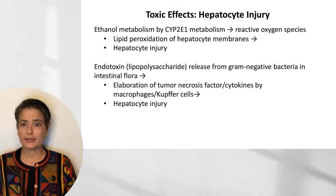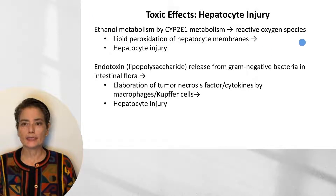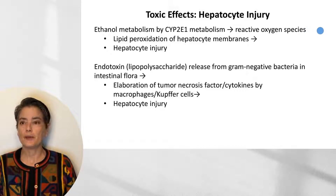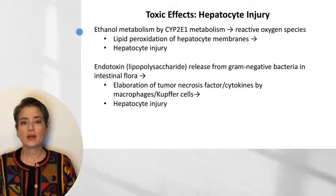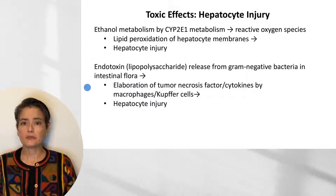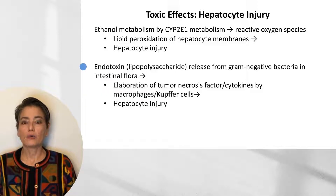Regarding direct hepatocyte injury: ethanol metabolism by CYP2E1 produces reactive oxygen species, which can lead to lipid peroxidation of hepatocyte membranes and direct hepatocyte injury — covered in greater detail in the liver chapter of Robinson-Kumar Basic Pathology. In addition, ethanol use can cause release of endotoxins and lipopolysaccharides from gram-negative bacteria in the intestinal flora. This endotoxin release causes macrophages and Kupffer cells to release tumor necrosis factor and cytokines, which can cause direct hepatocyte injury as well.